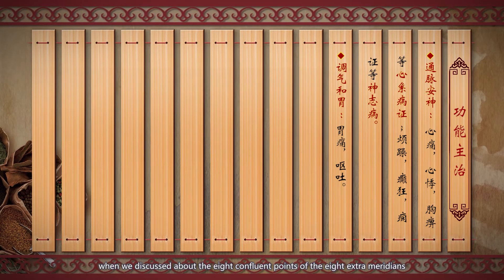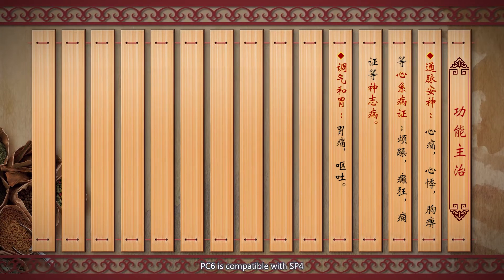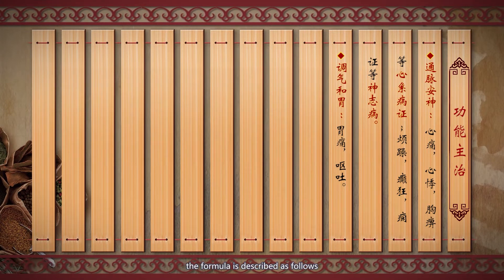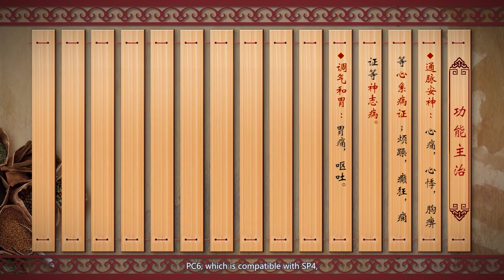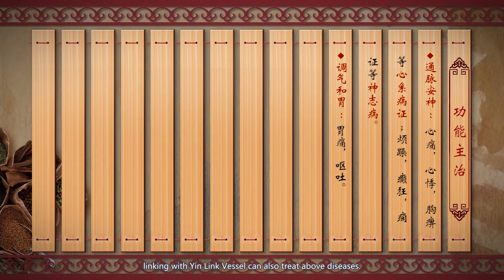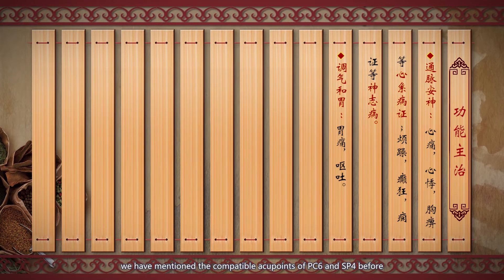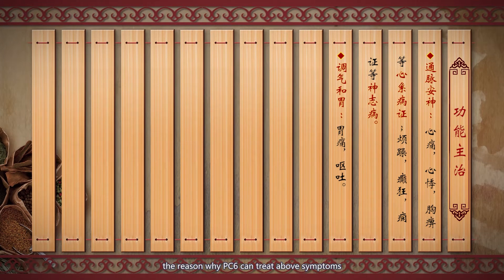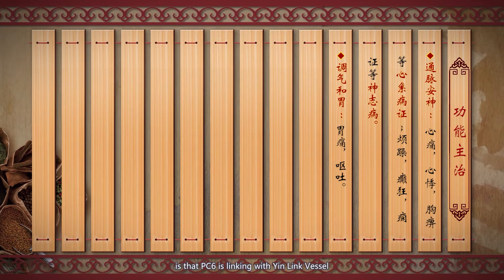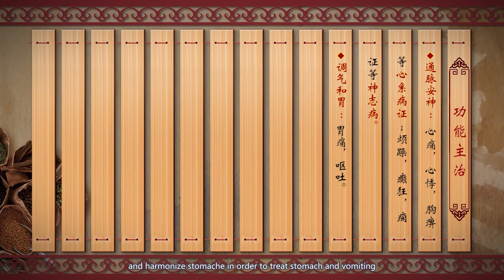Regarding the eight confluent points of the eight extra meridians, there is a formula about the compatible points of PC6. PC6 is compatible with SP4. SP4, linking with Chong Mai, can treat disease of the heart, chest, and stomach. PC6, linking with the yin-linking vessel, can also treat the above diseases. This pair PC6 and SP4 can treat symptoms of the stomach, heart, and chest, as PC6 is linked with the yin-linking vessel, giving it the function of rectifying qi and harmonizing the stomach.